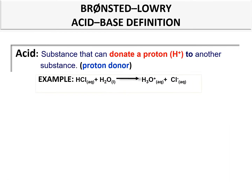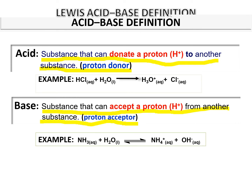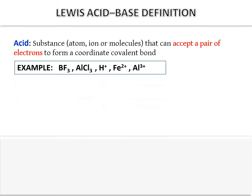According to Brønsted-Lowry, an acid is a substance that can donate a proton to another substance — also called a proton donor. A base is a substance that can accept a proton from another substance — also called a proton acceptor.